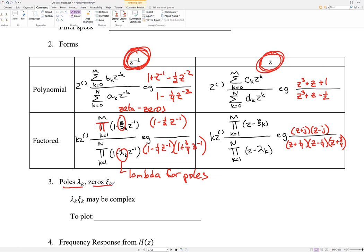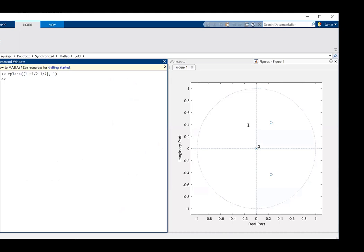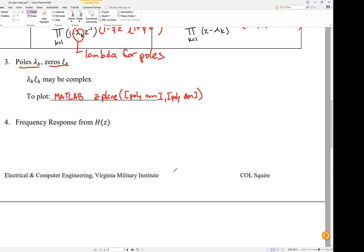Poles are lambdas. Zeros are typically written as zetas. If you want to plot them quickly in MATLAB, the MATLAB command is z-plane. And you feed it your unfactored polynomial numerator and your unfactored polynomial denominator. So let me give you a quick example of that. Here's MATLAB. And to the right, you can see where the zeros and the poles are for the function h of z is equal to 1 minus 1 half z to the negative 1 minus 1 quarter z to the negative 2. And 1 is in the denominator.